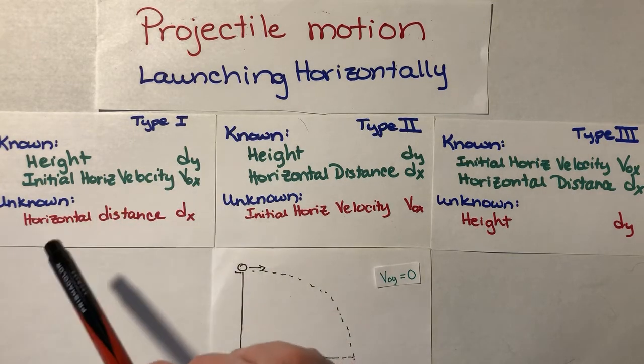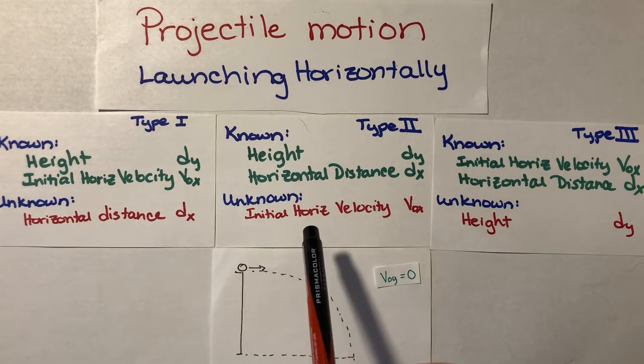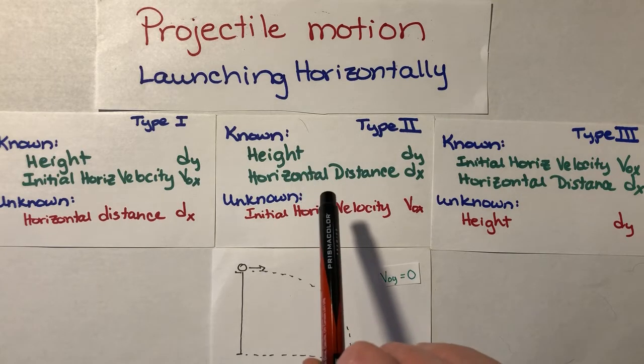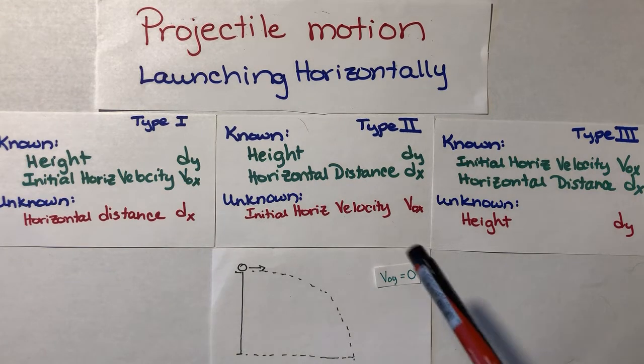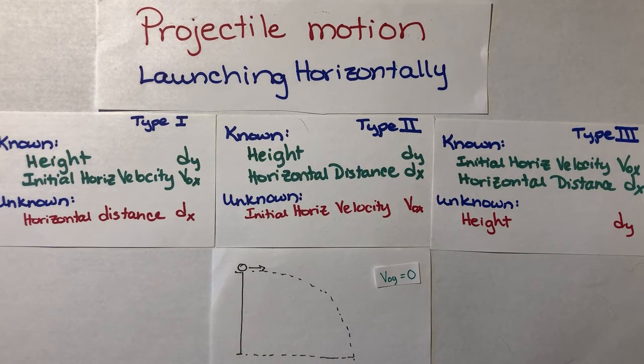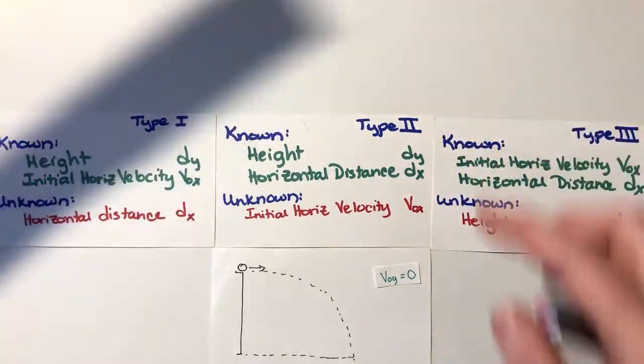First video addressed type 1 of these problems. This video will address type 2 where we know the height and the horizontal distance traveled, that's this part and this part of the drawing, but we do not know the initial velocity or v0 in the x direction. So let's take a look at today's question.